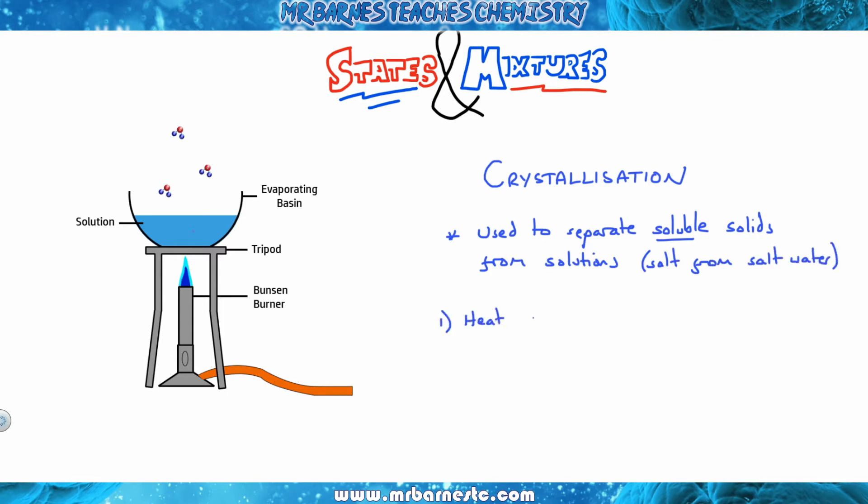Crystallization is used to separate soluble solids, for example salt or sugar, from salt or sugar water. All you need to do to separate them is to evaporate off the water. You heat it up gently with a Bunsen burner, evaporate off about half of it. If you evaporate more, you might start to get the crystals spitting out. Then you leave it to cool. The rest of the water will evaporate off and leave your crystals behind.